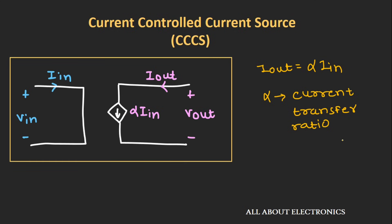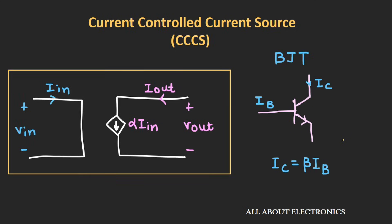Now let's see the practical example of the current-controlled current source. The BJT, or bipolar junction transistor, is the practical example, where the base current Ib is controlling the collector current. The collector current IC is a function of the input base current Ib, and the relation can be given by this expression.